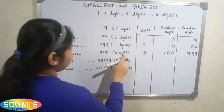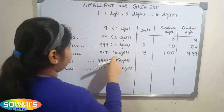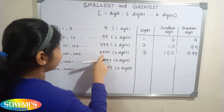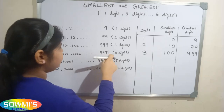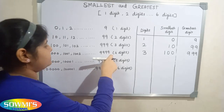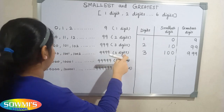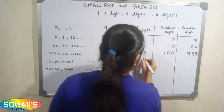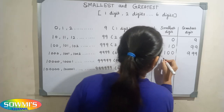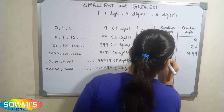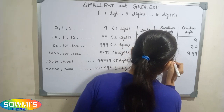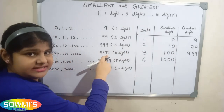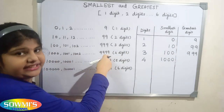Next we will see four digit number. Four digit number starts with 1000 and ends in 9999. So the smallest four digit number is one thousand, and the greatest four digit number is nine thousand nine hundred and ninety-nine.